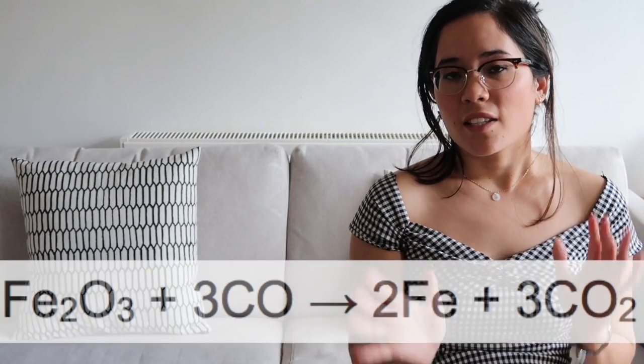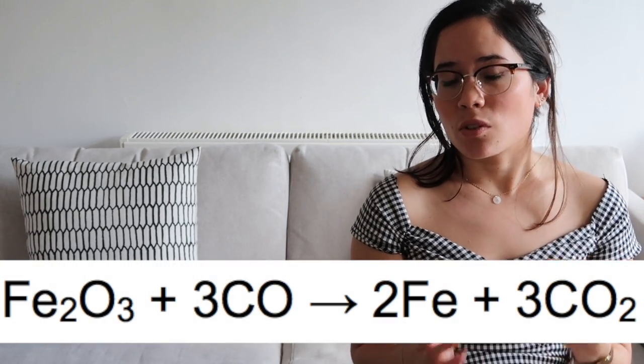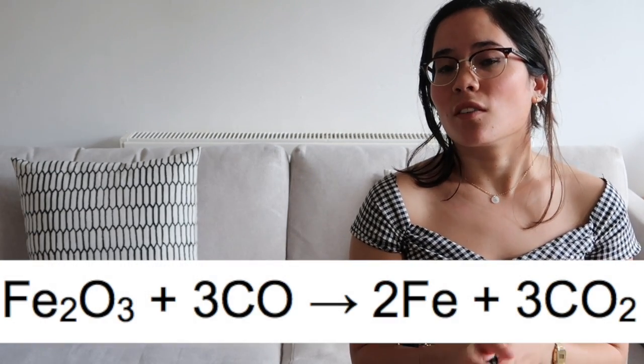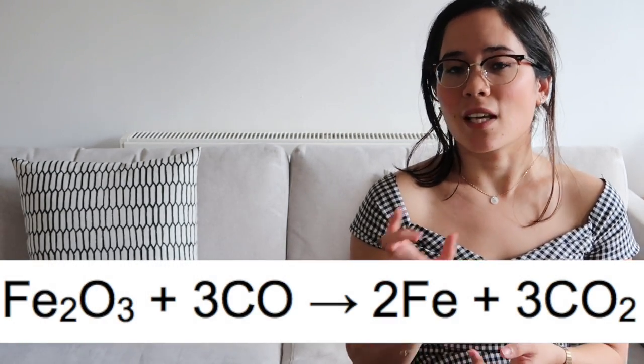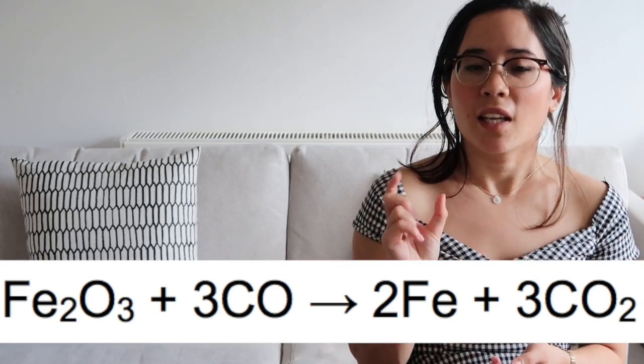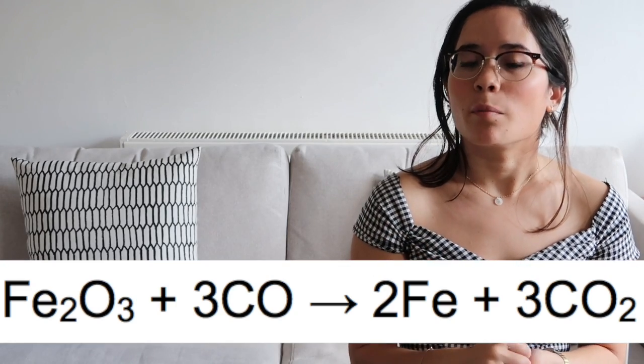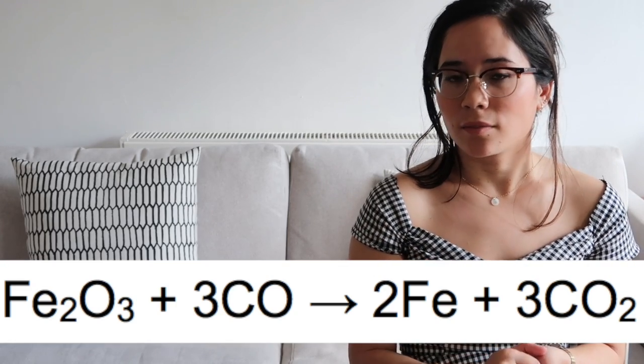Now write the equation for the reaction between the reducing agent, carbon monoxide, and Fe2O3. This equation is the most important equation involved in the whole of the blast furnace, because this is actually where we're getting the iron by itself.